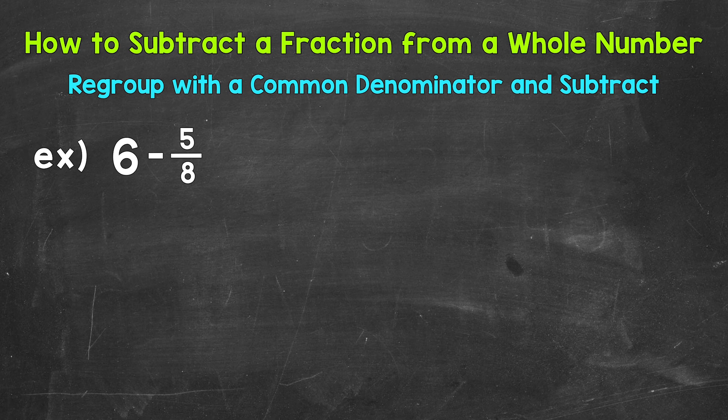Let's jump into our example where we have 6 minus 5 eighths. Now the first thing that we're going to do, we're going to regroup or change our whole number to a mixed number, and the fractional part of that mixed number needs to equal one whole, and we need to keep a common denominator in mind.